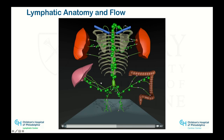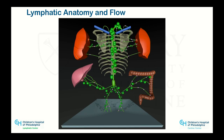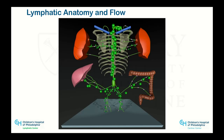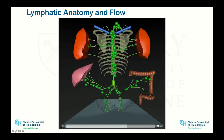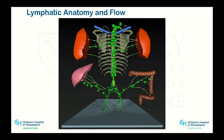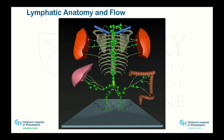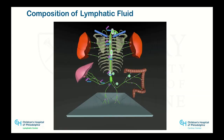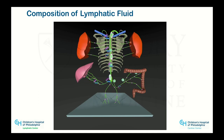Two very important organs — especially in heart failure. The liver is one of the biggest problems. Liver lymphatic flow is a huge problem in these patients, and our understanding of this will need to increase to better understand what is happening to them. There are many different compositions of lymph fluid.